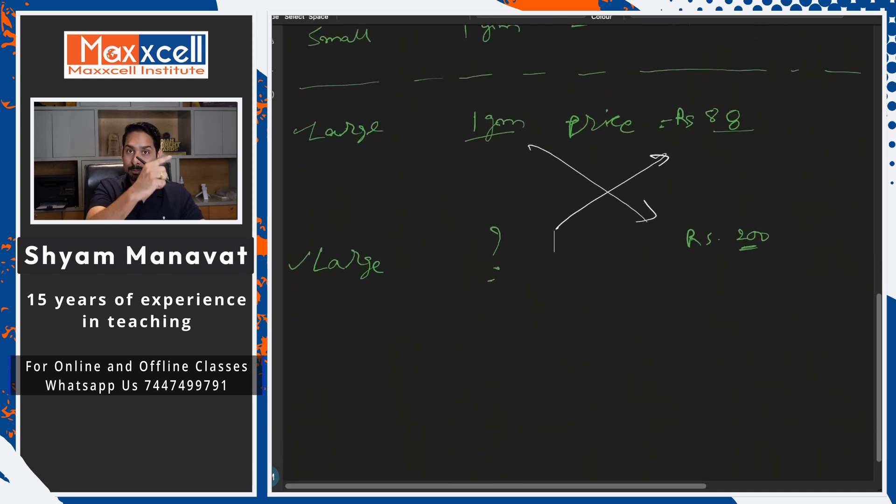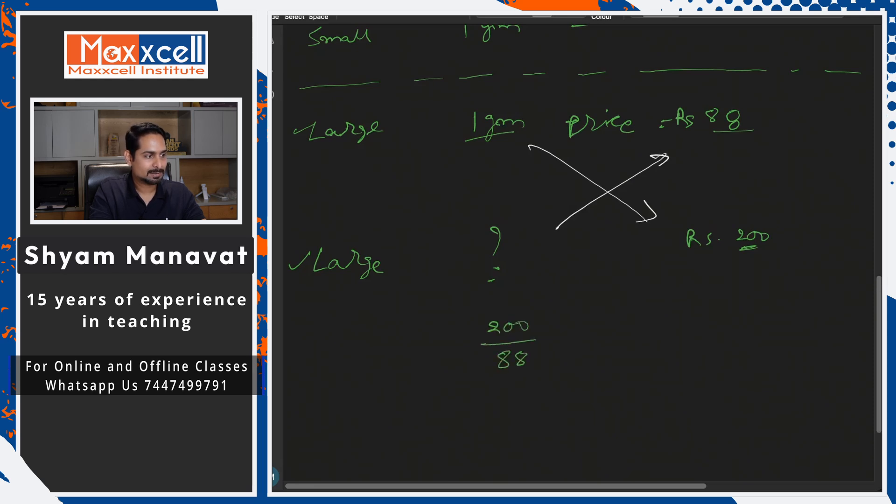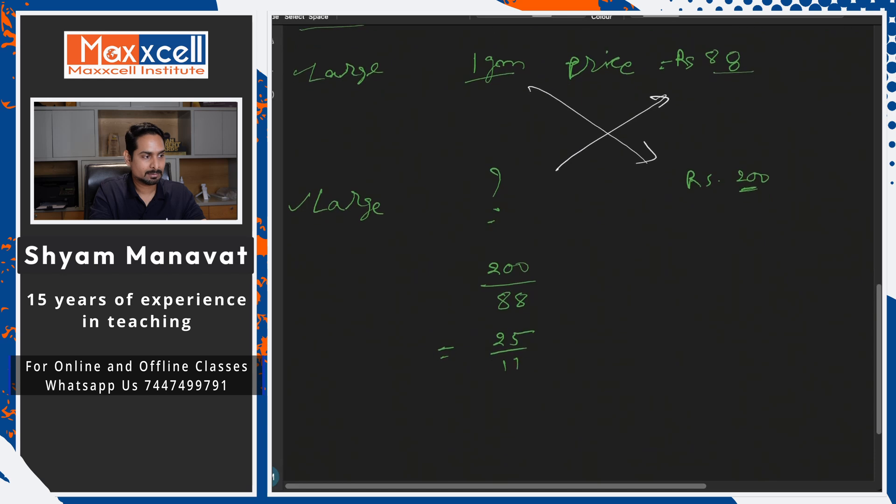Guys, we have discussed the chain rule in ratio proportion, so you can go through the ratio proportion lectures if you have not gone through that. So now let us cross multiply. So this question mark will be equal to 200 divided by 88. That is nothing but, if you cancel this, you will get 25 by 11. That is the weight of the large box.